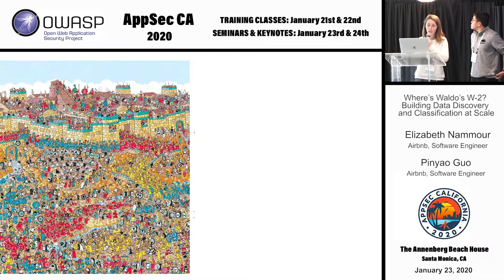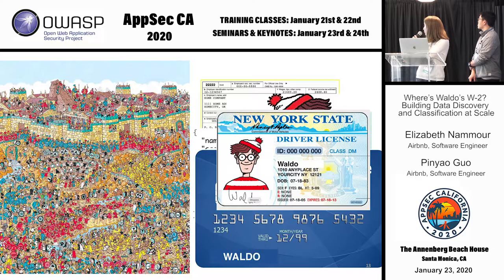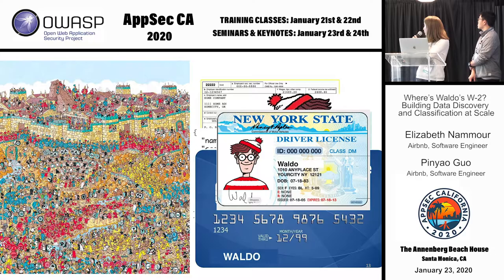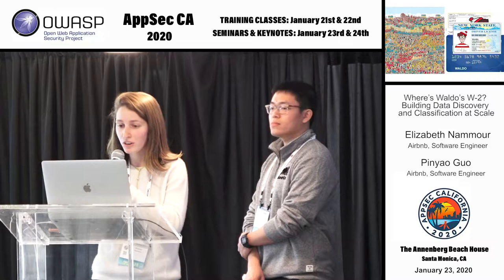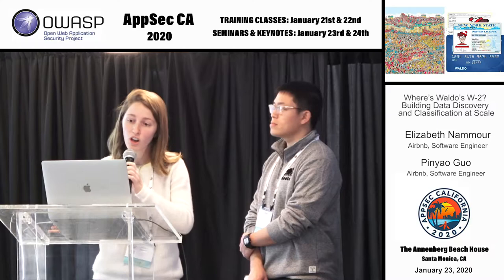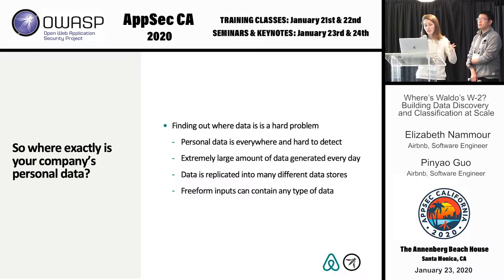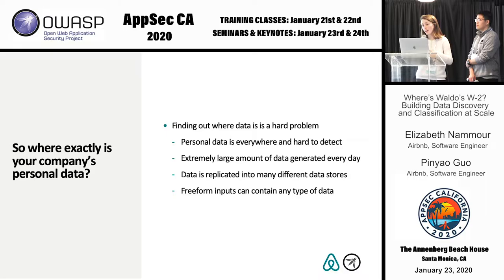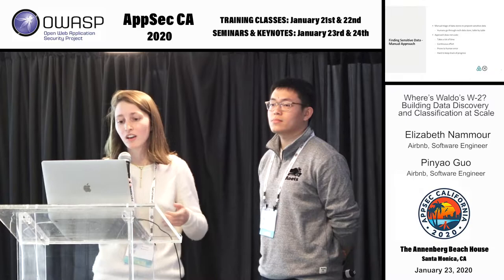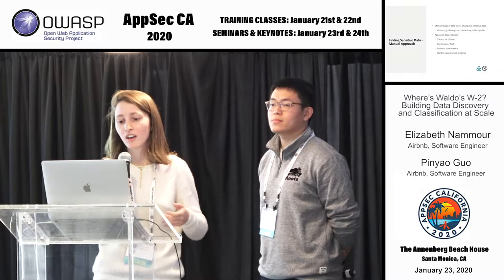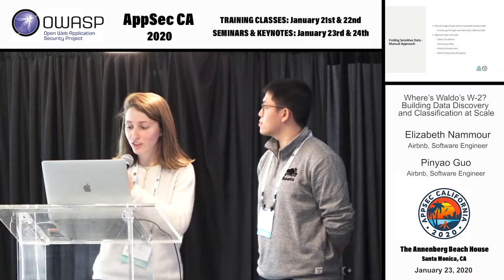What data do we have on Waldo? A company could store his W2, his picture, a JSON blob with his city, state, email, his IP address, marriage certificate, social security number, credit card information, and driver's license — and this could be everywhere: S3 bucket, MySQL database, Hive database. A lot of companies ended up complying with these laws manually, with a human going through every single database table by table. This really doesn't scale — it takes so much time, it's boring, it's continuous, and it's hard to keep track of what you've already done. Now Pingyao is going to talk about how we started to solve this at Airbnb automatically.